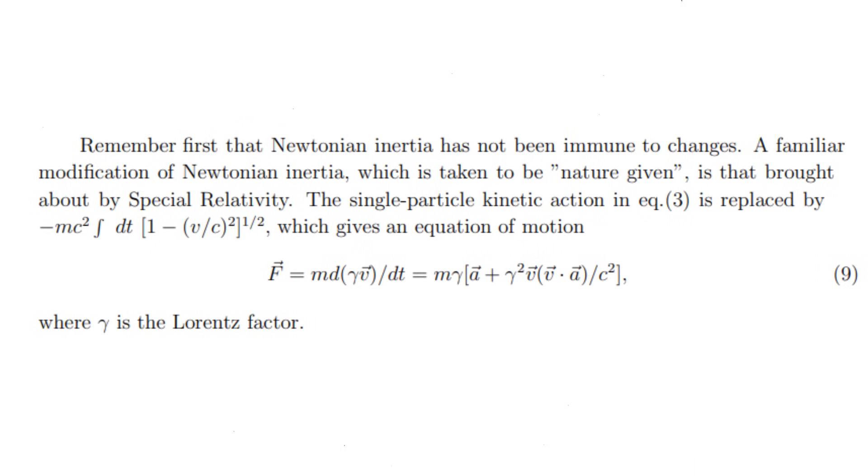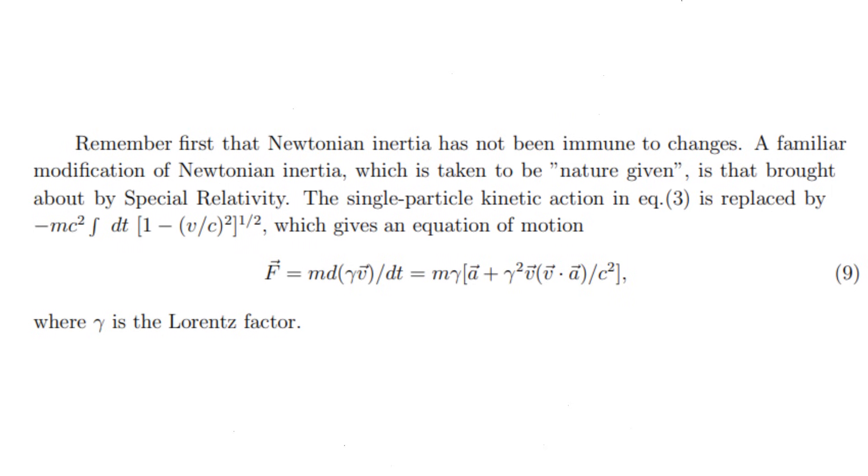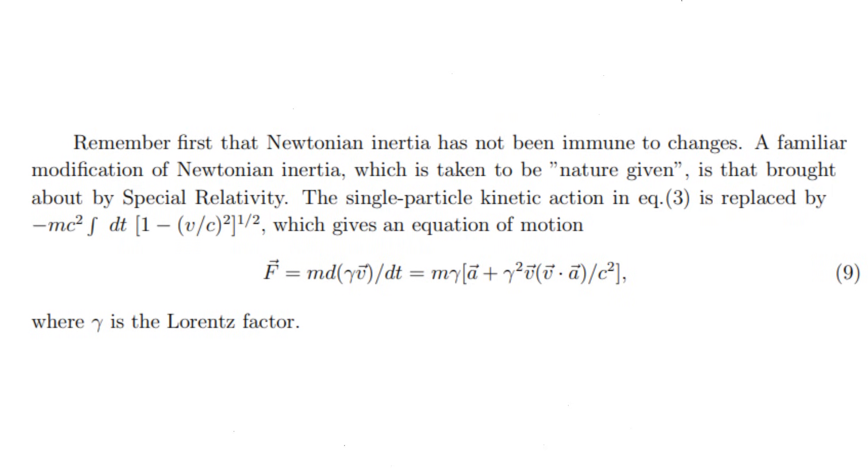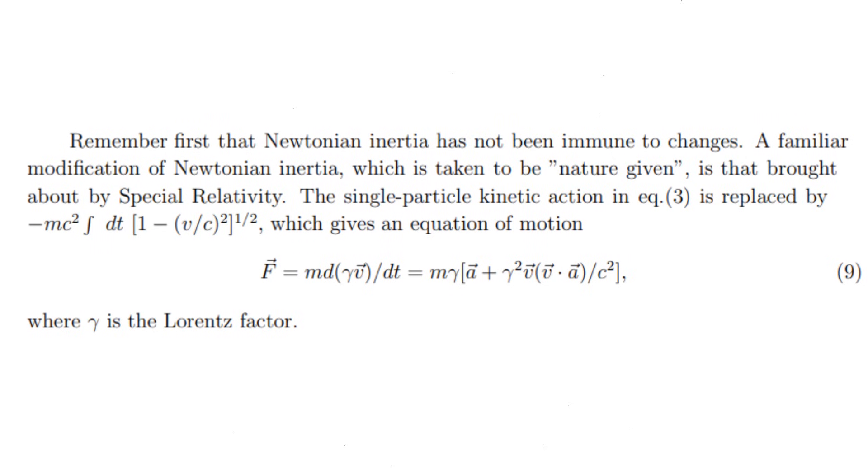Einstein modified inertia through special relativity, which changes the classical single-particle kinetic action when accounting for relativistic effects by incorporating the velocity of the particle relative to the speed of light.